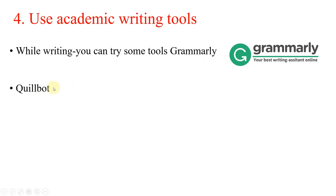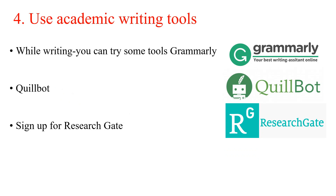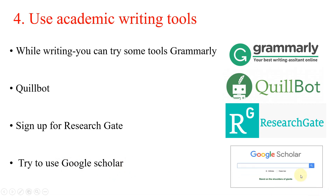A similar tool to Grammarly is Quillbot, which you can also get and it adds its application in MS Word. You can also sign up for ResearchGate, a platform where many researchers share work - you can follow researchers related to your field and know what they are publishing and finding, keeping you connected with frontiers in your subject. You can also learn how to use Google Scholar to search for different articles.